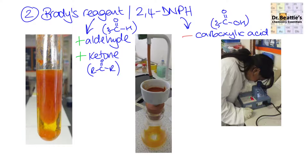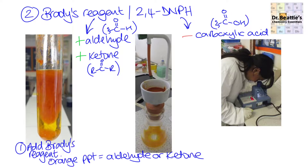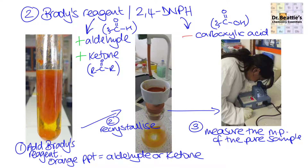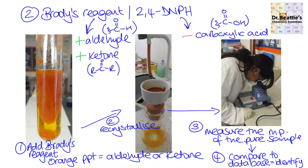The second test is Brady's reagent, or 2,4-DNPH. This gives positive results with aldehydes and ketones, so it won't help you distinguish between them, but it does eliminate a carboxylic acid since that won't react. The procedure is straightforward: add your sample to Brady's reagent and if you form an orange precipitate, you have an aldehyde or ketone. The second step requires recrystallisation of this precipitate, then you measure the melting point of the pure sample obtained. You can then compare it to a database of known compounds to work out the exact identity of the aldehyde or ketone.